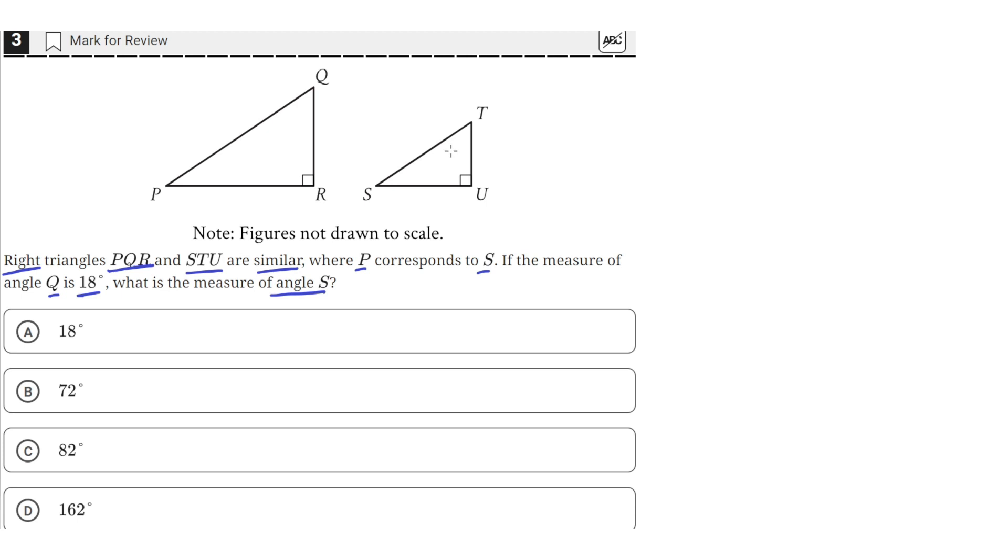Okay, so we have these right triangles here, which means that they have a 90 degree angle right here, R and U, and these triangles are similar.